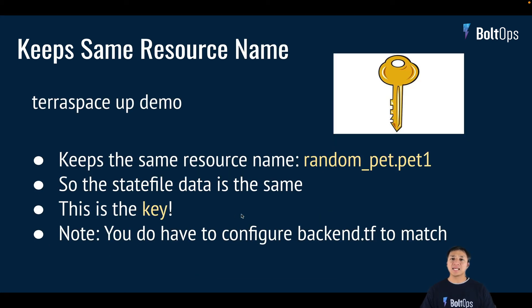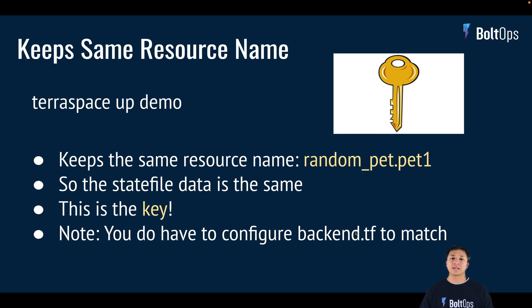That's pretty much the key to keeping the same state file: make sure you keep the same resource name by not using the module keyword, and then you can use the same state file. You do have to configure backend.tf to match — you want to match the bucket names, the keys, and everything. Once you do that, you're going to see no difference at all.